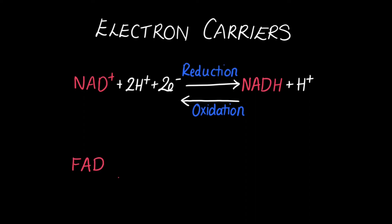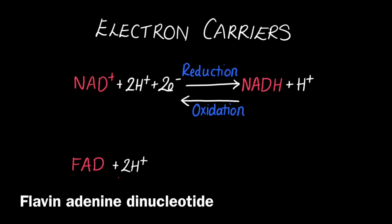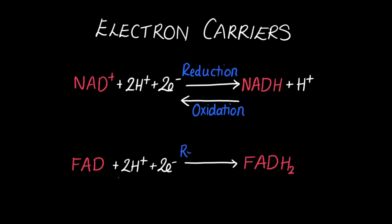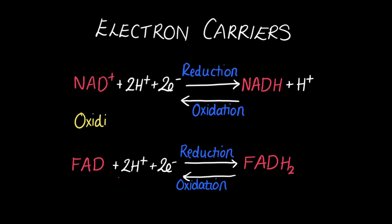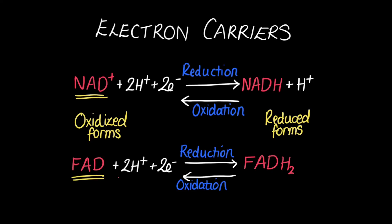The other electron carrier used in respiration is FAD, which stands for flavin adenine dinucleotide. When FAD combines with two hydrogen ions and two electrons it produces FADH₂ — this is reduction because electrons are gained. Vice versa, splitting FADH₂ back into FAD plus two electrons and two hydrogen ions is oxidation. Therefore, the oxidized forms are NAD+ and FAD, while the reduced forms are NADH and FADH₂.